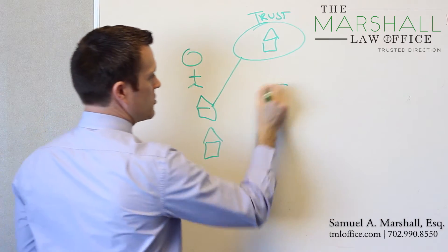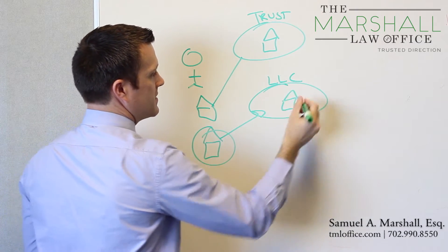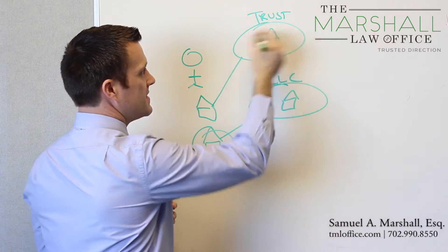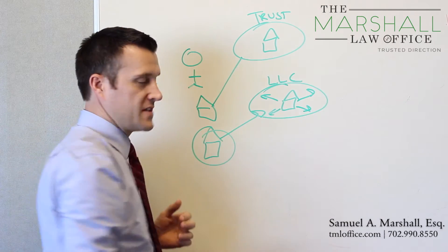So what you do is you set up an LLC, and you put the rental property in the LLC. That way if anything happens on that rental property, these assets are protected, so they can only stay within this barrier of protection.